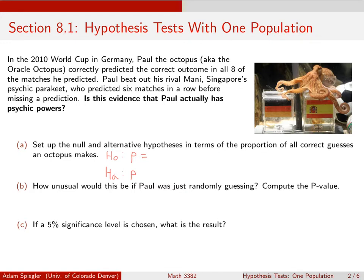So here, the null hypothesis is always the boring claim, which in this case would be Paul is not psychic. In other words, Paul is just randomly guessing. And so if Paul is just randomly guessing, there are two teams playing. He has a one out of two chance of guessing correctly.